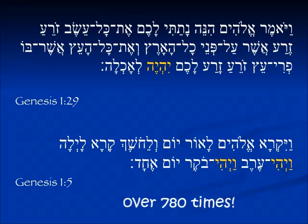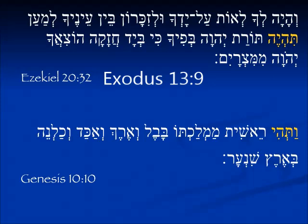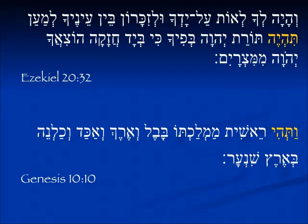V'yehi appears many times throughout the Tanakh. For the feminine singular 'she will be,' the normal form appears in Ezekiel 20:32: tehyeh Torah l'Yehovah — 'Torah is feminine, it takes the feminine verb; she will be the Torah of Yehovah.' In the reversing vav form, Genesis 10:10: v'tehi reshit mamlachtо — 'and it was the beginning of his kingdom.' Reshit is feminine, so it takes the feminine verb. Vav in front, no hey.